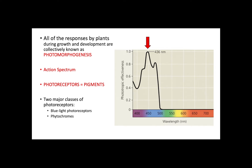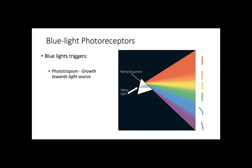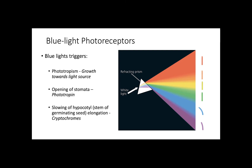The two major classes of photoreceptors are blue light receptors and phytochromes. The blue light photoreceptors, as the name implies, are activated upon exposure to blue light. This specific wavelength has been shown to induce phototropism, which is defined as growth or movement towards light sources. The opening of stomata is mediated by a protein kinase known as phototropin, and the slowing of hypocotyl elongation is regulated by cryptochromes, which are molecular relatives of DNA repair enzymes.